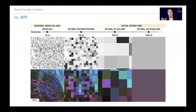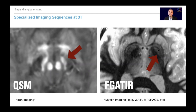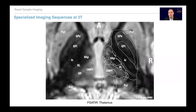A problem with imaging is that the resolution is too poor compared to what we just saw in those microscopy images. What can we do to improve that? At 3 Tesla you can basically use two strategies: one focuses on iron, one on myelin. Quantitative susceptibility imaging is really good for iron-dense structures such as the STN and the red nucleus. Myelin-sensitive sequences are really good for the pallidum and also for the thalamus — you can see laminae dividing the internal and external pallidum and even resolve thalamic nuclei.